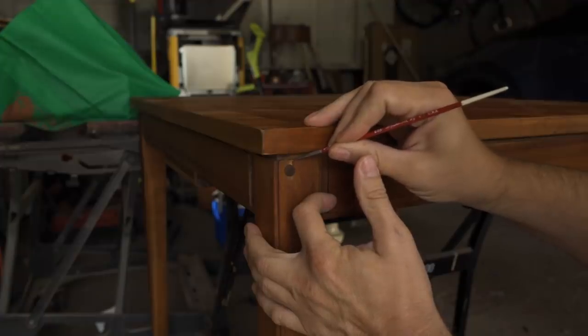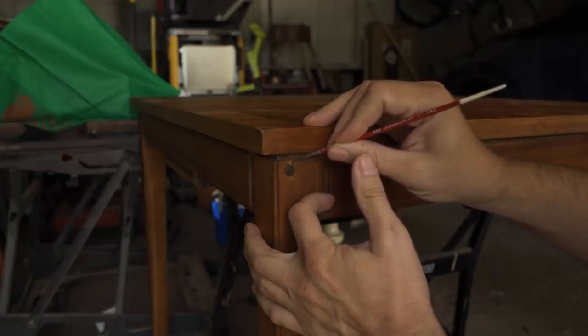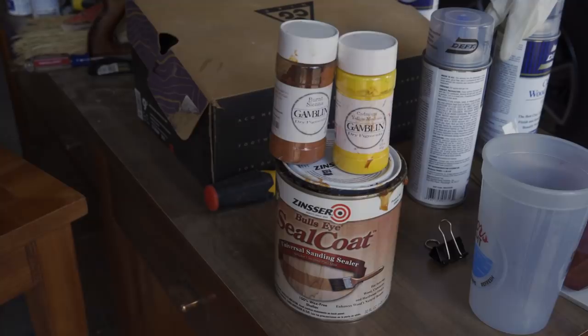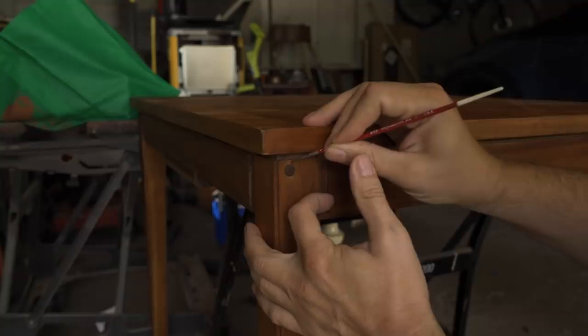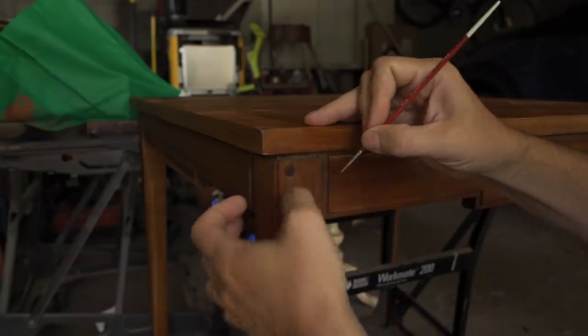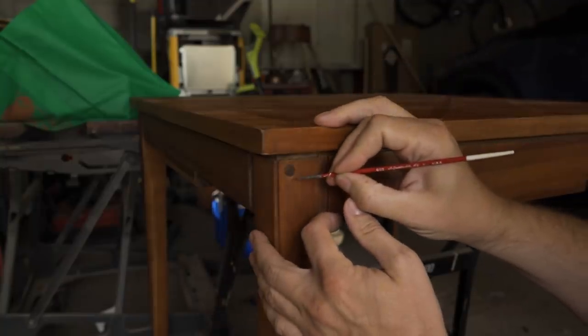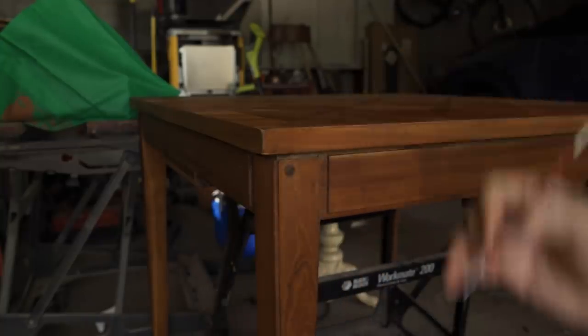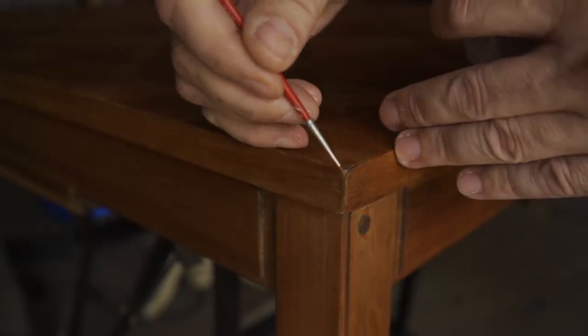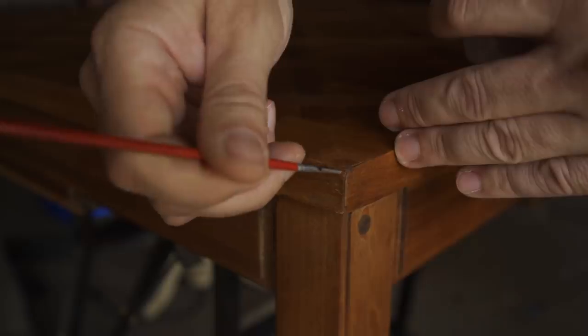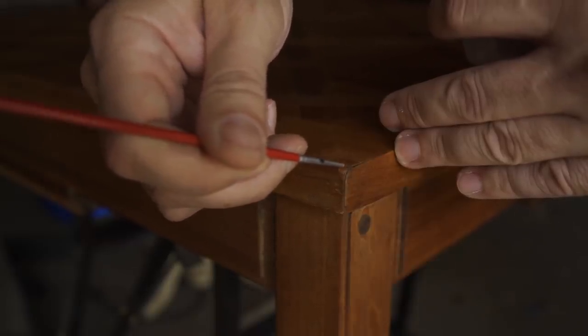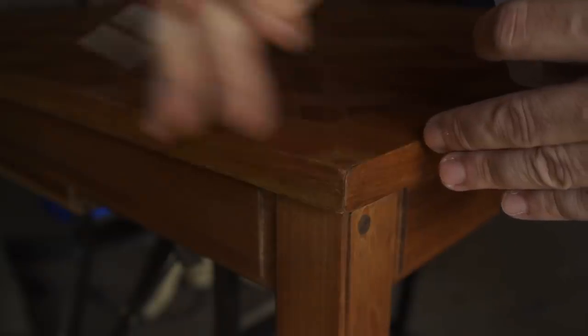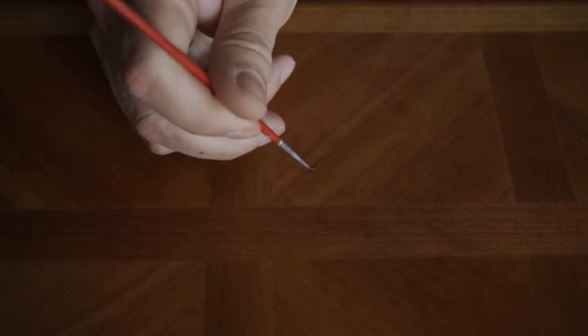I went back and touched up that wood filler around the plug that I put in. To do this, I just used some clear shellac and some pigments. I just mixed them up to get a color that blended in well. I also used it in a few other spots, like this corner that had a bald spot on it. And this little crack in the veneer where I had used some filler.